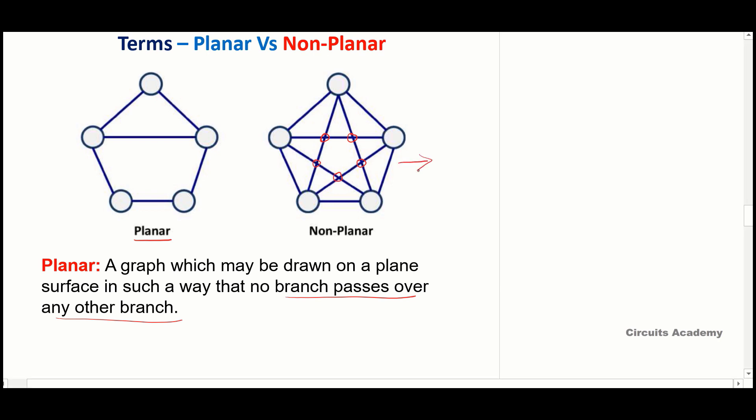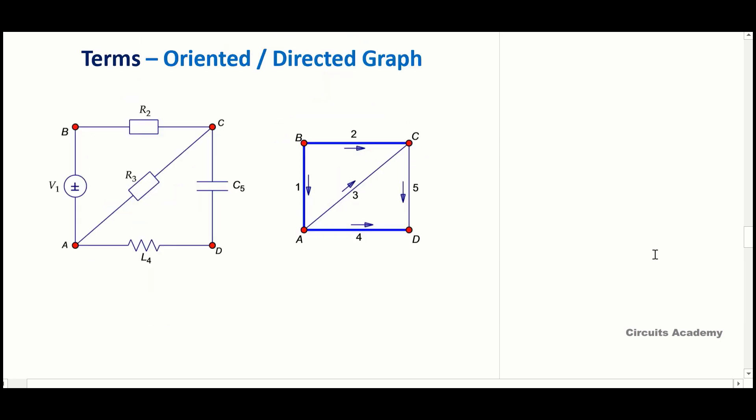On the other hand, in a non-planar graph, there are crossings of branches, and even if you try to redraw the graph you still end up with crossing branches. Next is the oriented or directed graph: if you add directions to the graph it is called an oriented or directed graph. If directions are given in the circuit diagram, use those; otherwise you can assume your own directions.